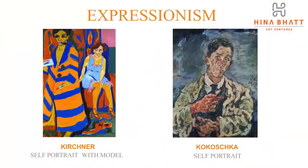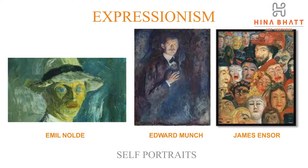Some other Expressionist works are represented here, while the one to the right is a self-portrait of Oskar Kokoschka. There are other self-portraits painted by Expressionist painters known for their use of color and line, by artists such as Munch, Ensor, and Nolde.